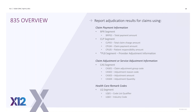In reporting the adjudication results for finalized claims, these are the key segments involved. The BPR segment is the total paid amount for the entire payment by provider. The CLP segment — for each claim — reports the total charges, total payment, and total patient responsibility. The PLB segment is where you would see provider adjustment information — we're not going to talk about that today, but a future session could do a deeper dive into those provider-level adjustments.